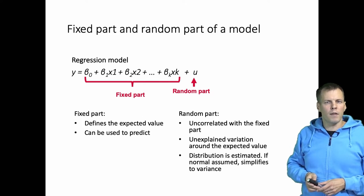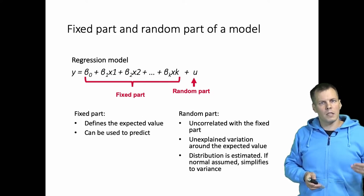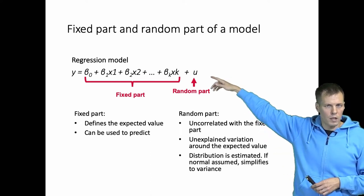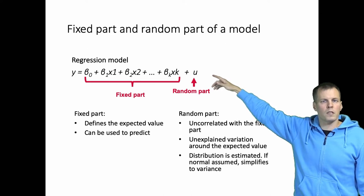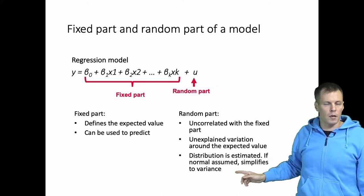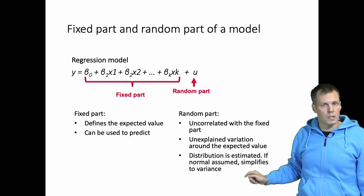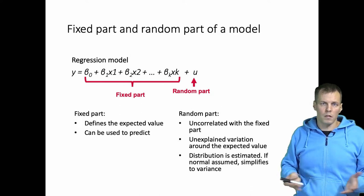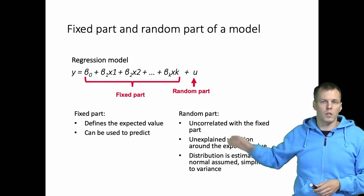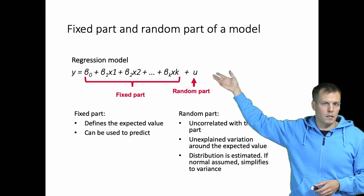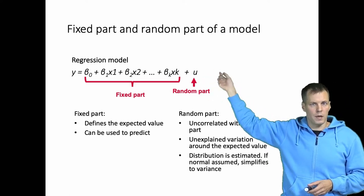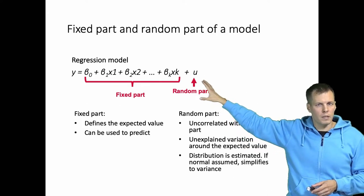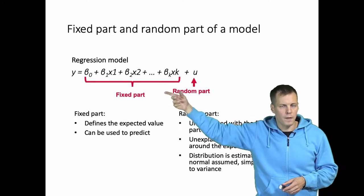To be more precise, in the random part we don't estimate a specific value but we estimate a distribution. Normally we assume that u, the error term in the regression model, is normally distributed, in which case estimating u simplifies to estimating the error variance of the model. We could use other distributions with more parameters, but normally we just use the normal distribution, estimating the distribution by estimating its variance. So the random part is variation that we estimate; the fixed part is specific values that we estimate.